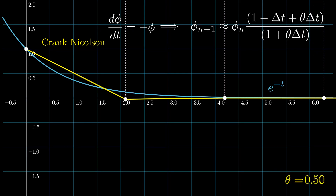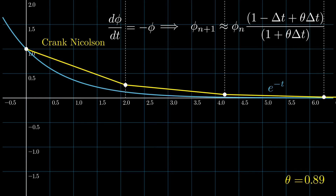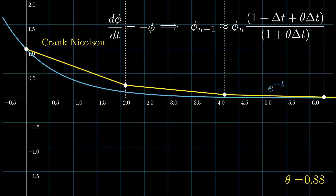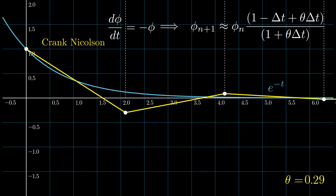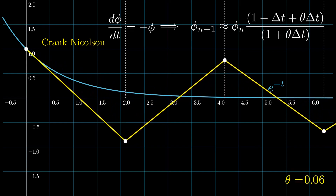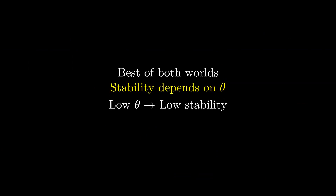Let's try changing theta. Increasing it to 0.95, the graph becomes very similar to implicit Euler. Going to 0.05, the graph is quite unstable. So Crank-Nicholson is kind of the best of both worlds, and we can choose how much stability we want by adjusting theta.